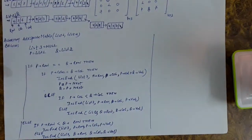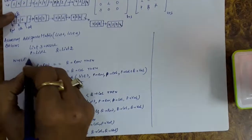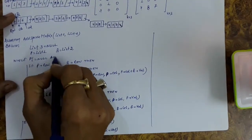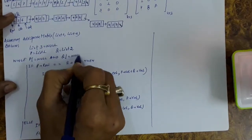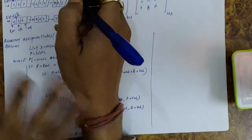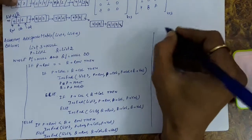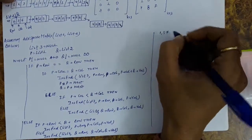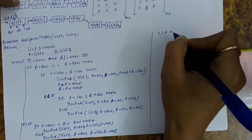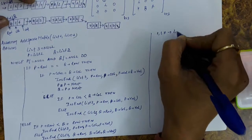We have covered all possibilities for one comparison. The comparison continues while P is not null and Q is not null. Let's walk through step by step. First element: row numbers equal, column numbers not equal — the first list's column is smaller, so element 1,1,7 is added to the final list. We advance. Next comparison: row numbers are not equal — the smaller row is on the Q side, so element 1,3,6 is added to the final list.